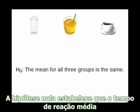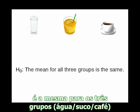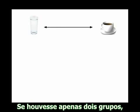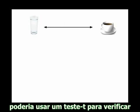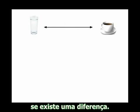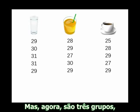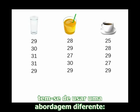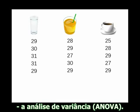The null hypothesis says that the mean reaction time for all three groups is the same. If there were only two groups, you could use a t-test to find out if there's a difference between them. But when you have three groups or more, you need to use a different approach: the analysis of variance.